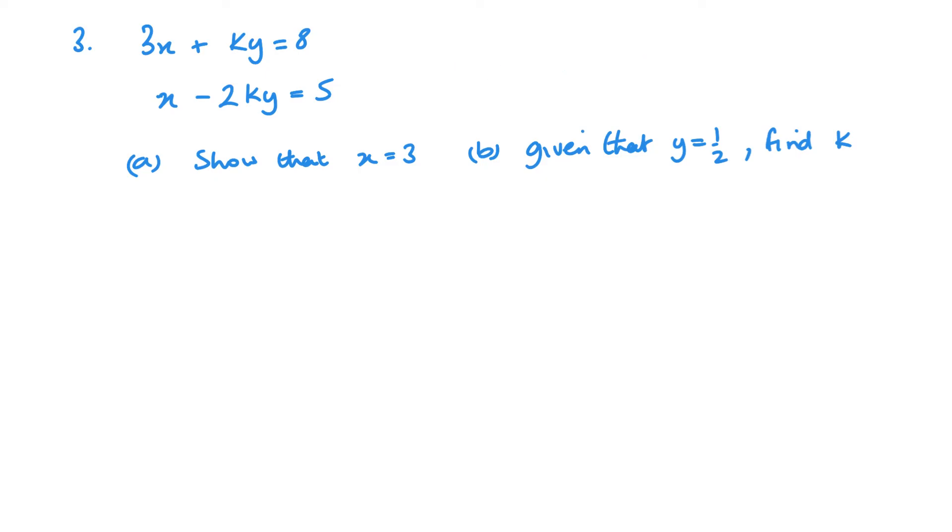Let's have a look at this question. So equation 1, equation 2, I'll times this one by 2. So 6x plus 2ky equals 16. Now it means that if I add my equations 3 and 2, the 2ky's will cancel. This is how I can work out part a. So I'll add equation 2 to equation 3. So x plus 6x is 7x, the minus 2ky plus 2ky is 0, and 5 plus 16 is 21. So x there is 3, and we've shown part a correct.